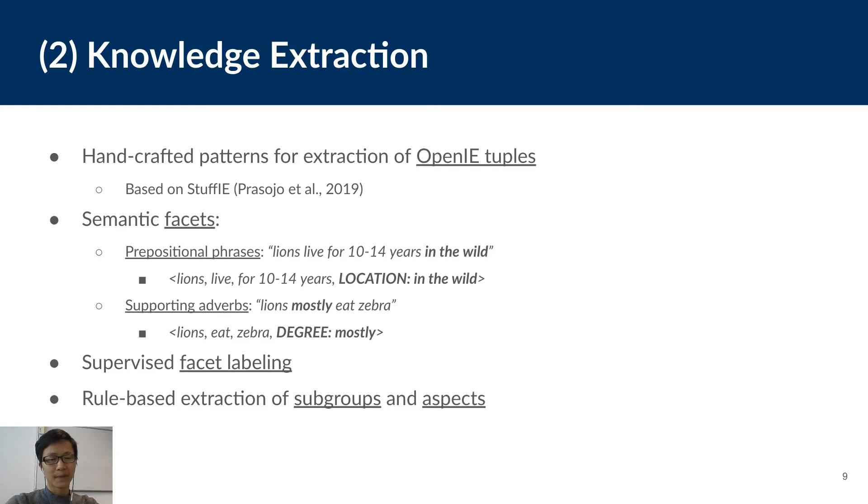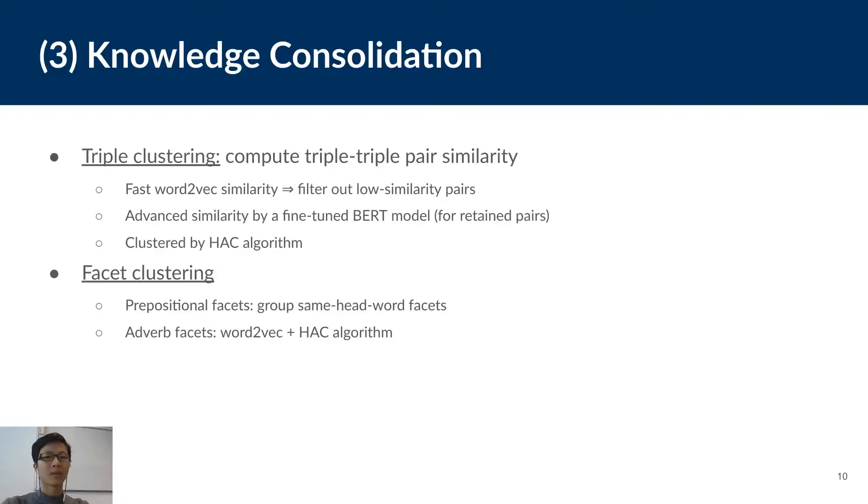For example, given the sentence lions lived for 10 to 14 years in the wild, our system extracts the tuple with subject lions, predicate lived, object for 10 to 14 years, facet label location and facet value in the wild. We use a supervised classifier to label the facets. And finally, in this phase, we use a list of simple handcrafted rules to extract refined subjects, including subgroups and aspects.